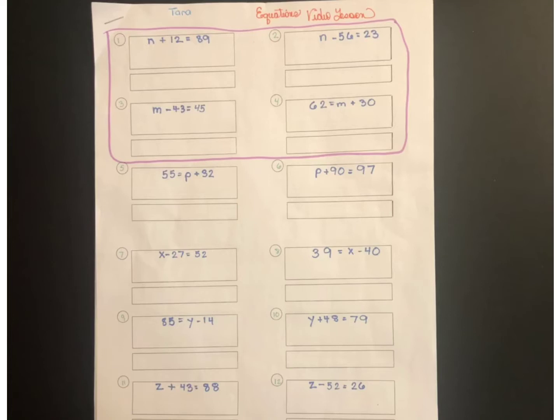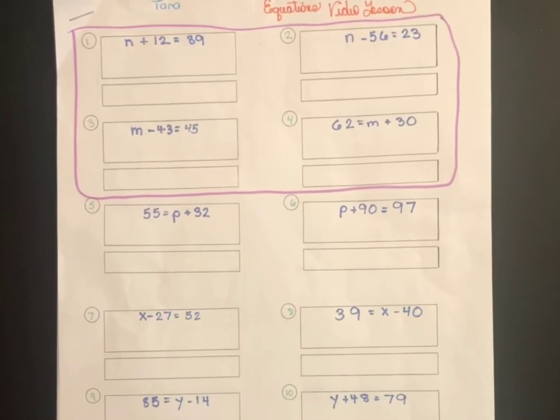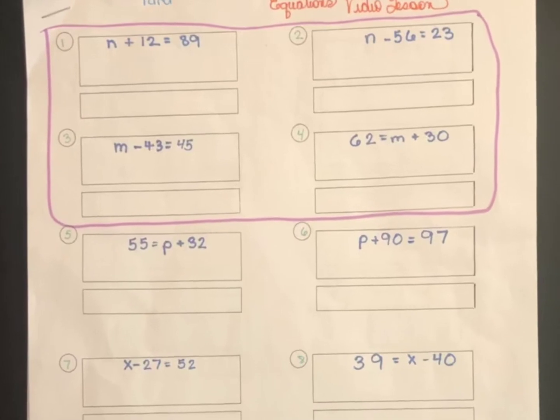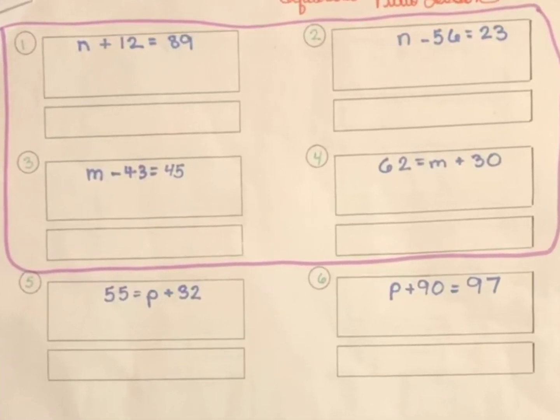Now remember, with algebra, what you do on one side, you must also do to the other. So you can't just take away a number on one side, but you've got to do it on both sides. So we've got to keep all the rules in mind.